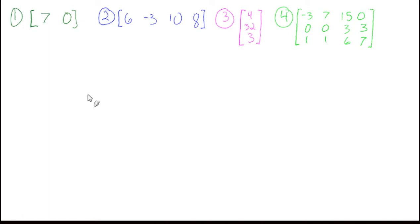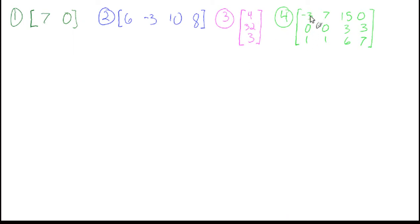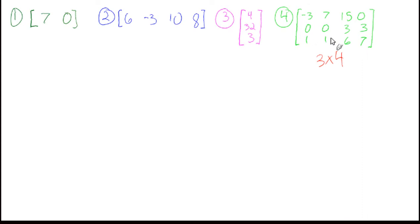We're going to start these example problems with a quick revisit of the order, or dimension, of a matrix. Starting with number 4 — remember, it's how tall the matrix is by how wide it is. This one is 1, 2, 3 tall, so it has 3 rows, and 1, 2, 3, 4 columns. So it's 3 by 4.